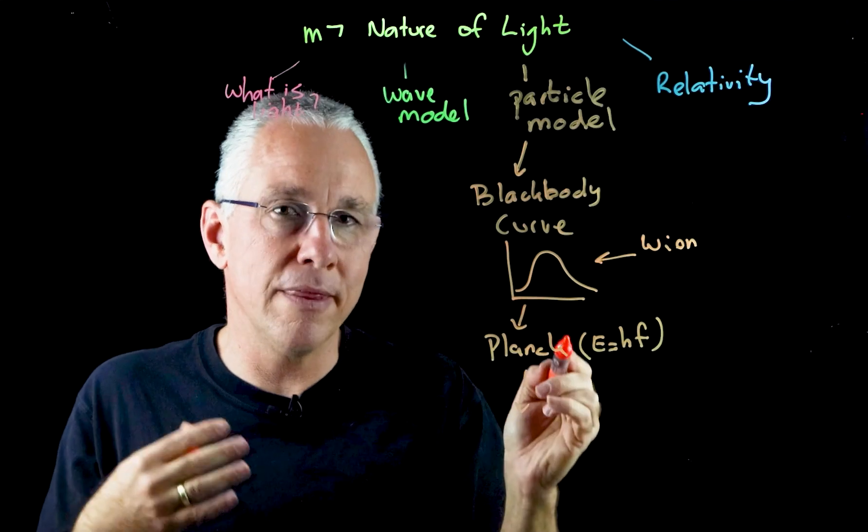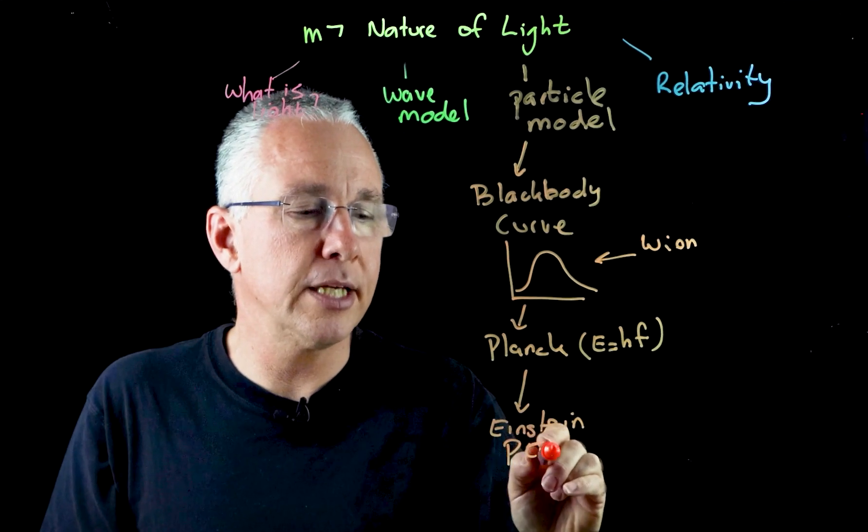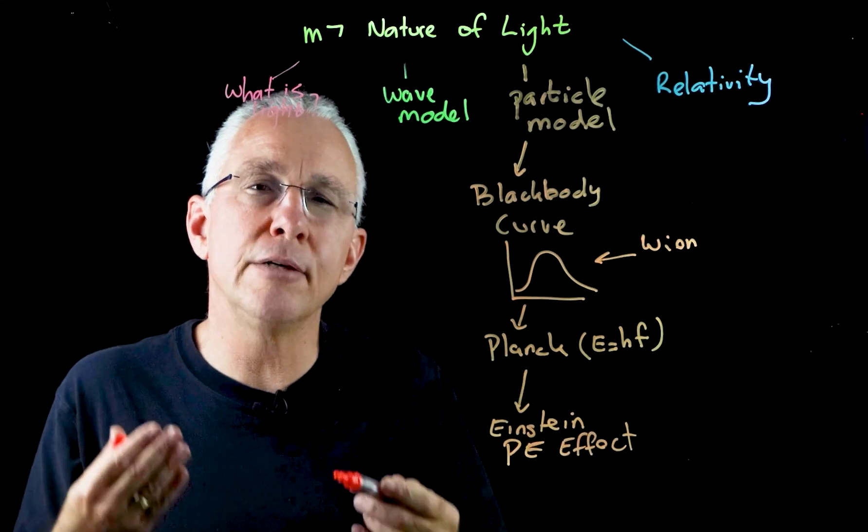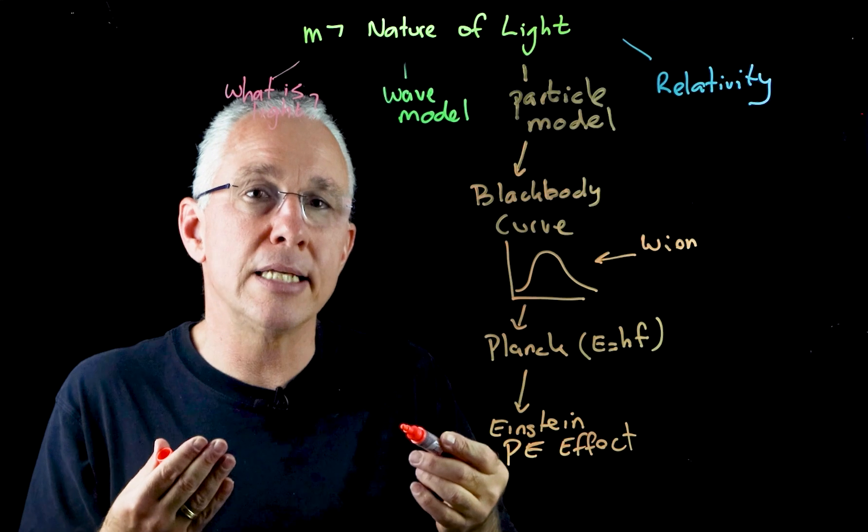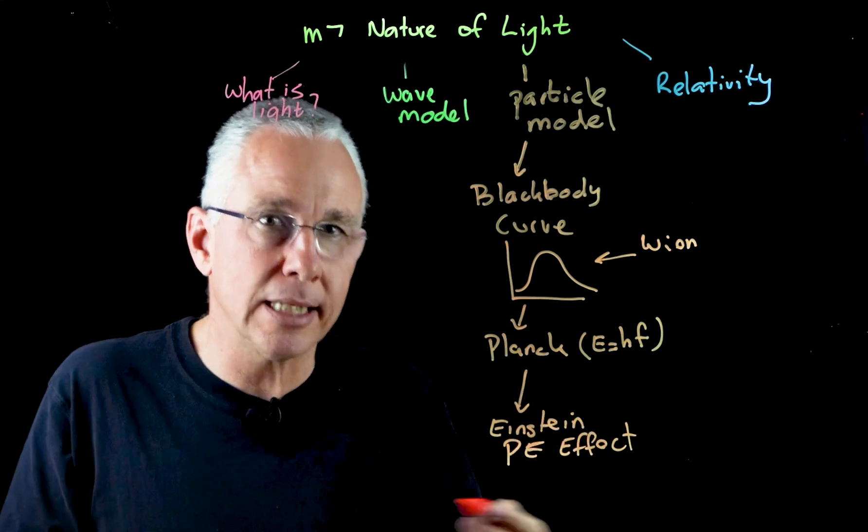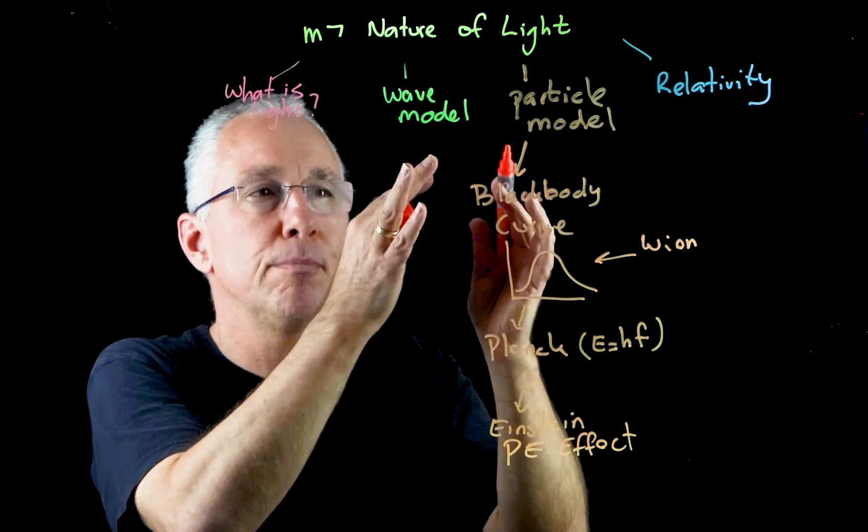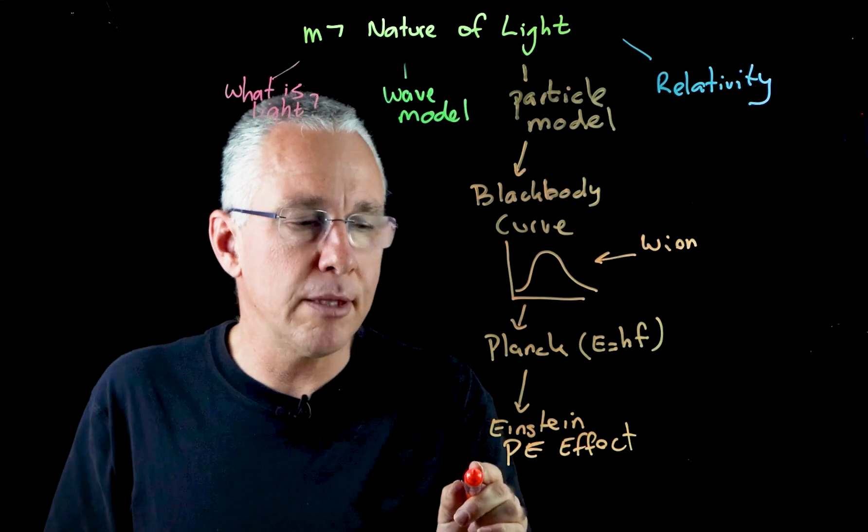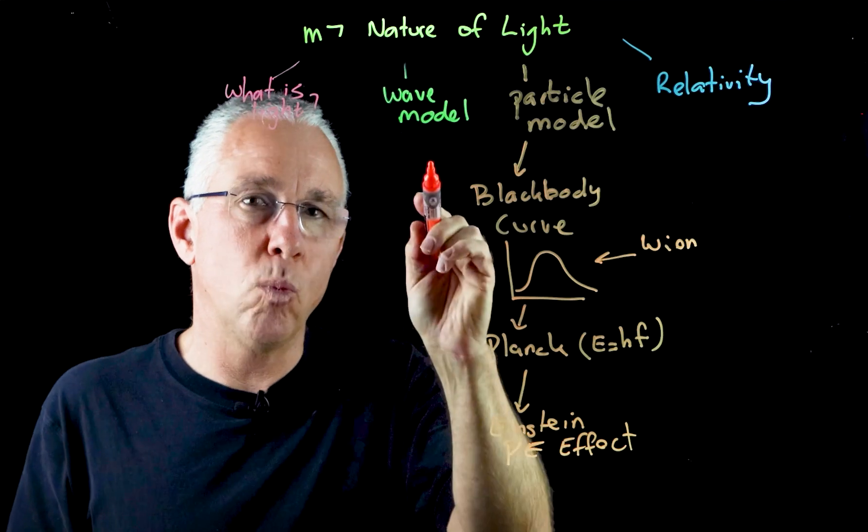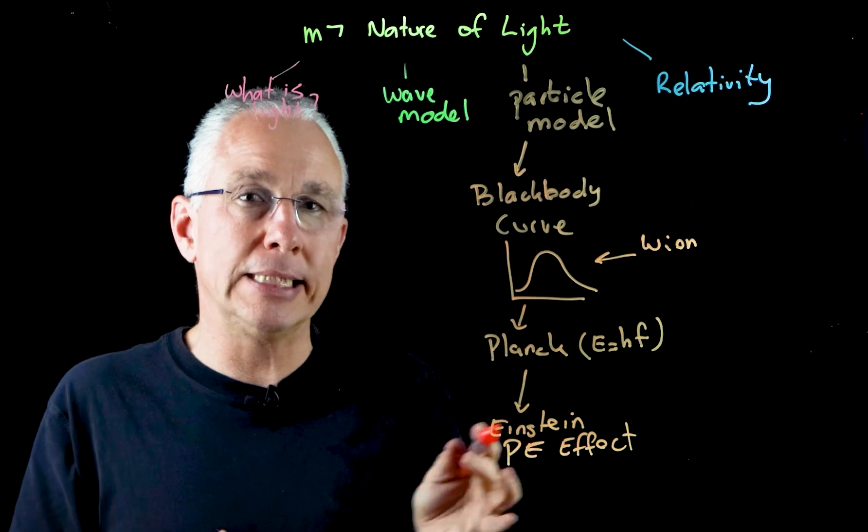This culminates in Einstein and the photoelectric effect. The photoelectric effect can be explained if we treat light as arriving in discrete units or discrete quanta, only later using the term photons. It provides us evidence for the particle model of light, and the photoelectric effect cannot be explained by light having a wave-like property.